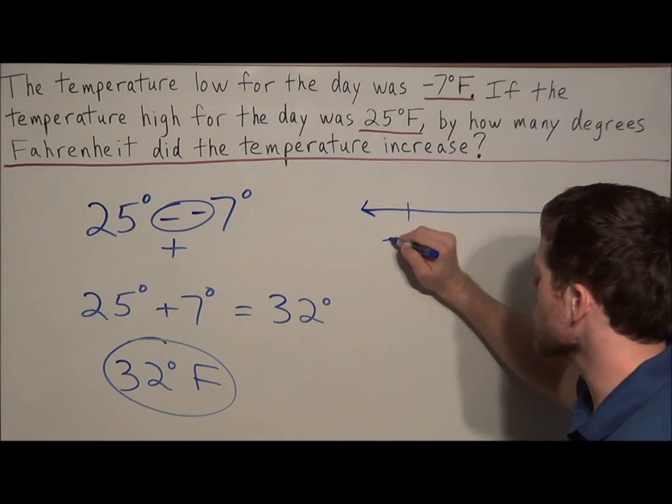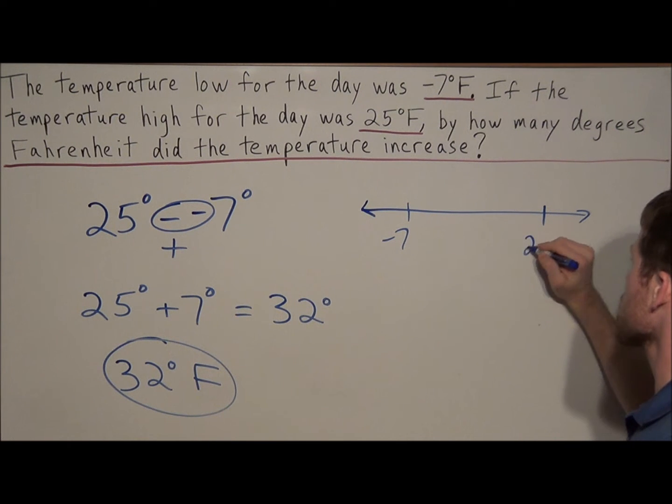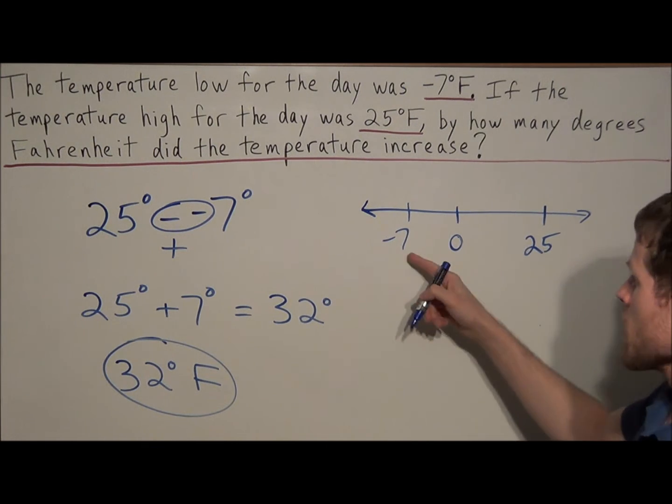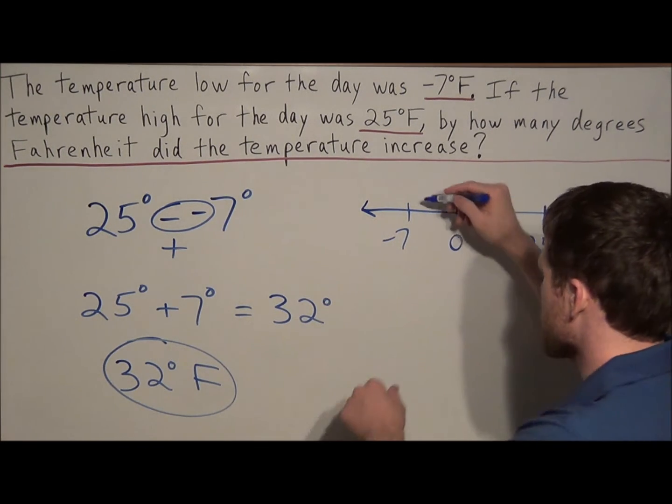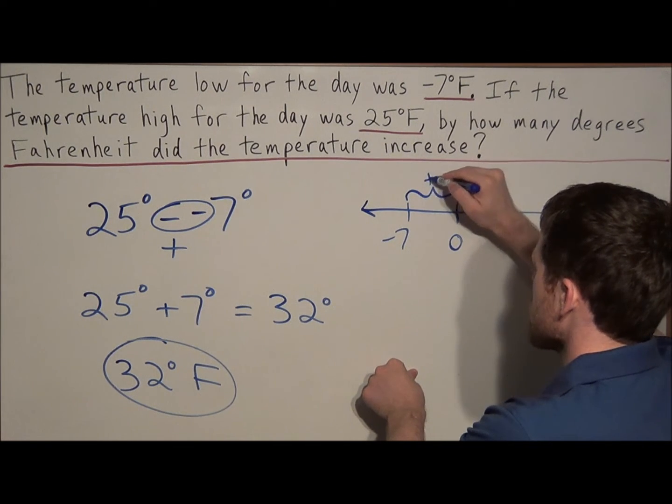The temperature low for the day was negative 7 and the temperature high was 25. So we kind of visualize where zero is going to be in this mix. So think about it, as the temperature increases, first it has to go to zero. And to get to zero, this is an increase of 7.